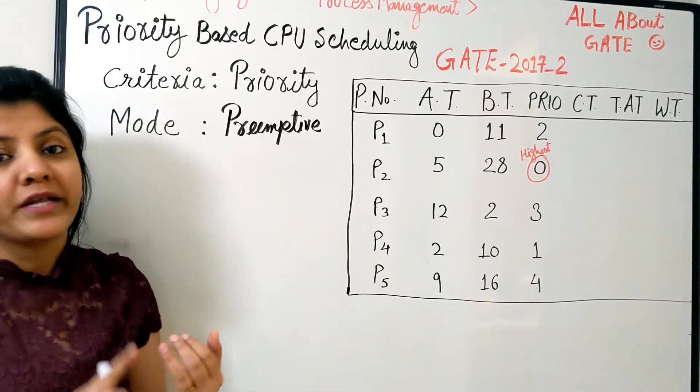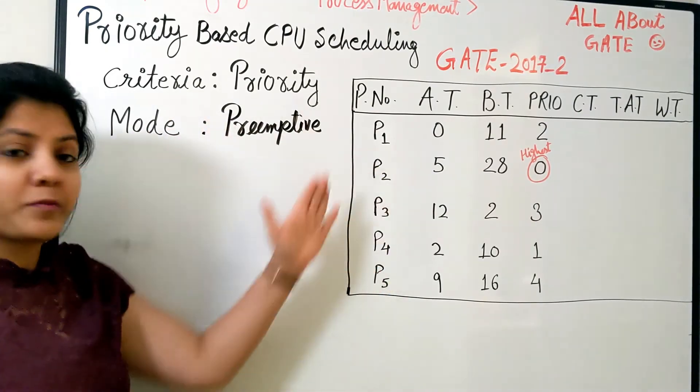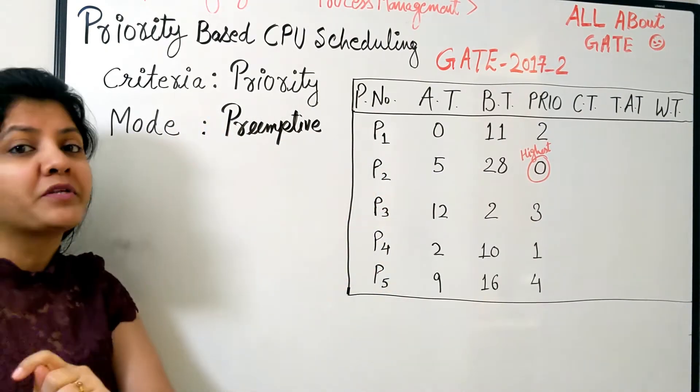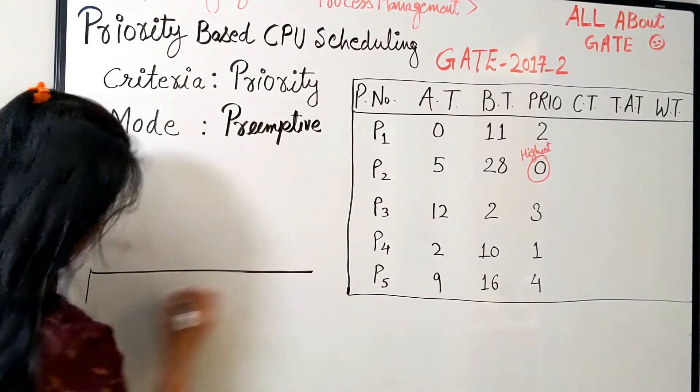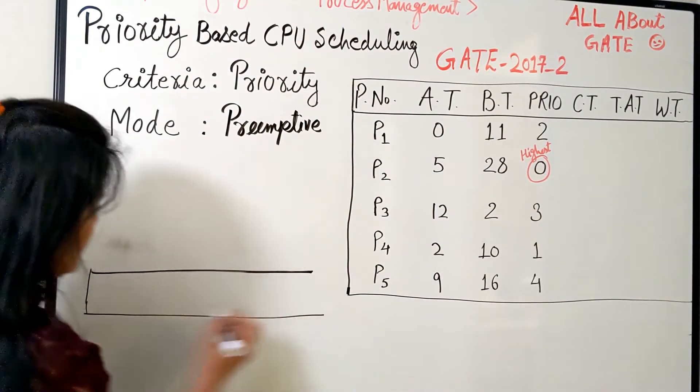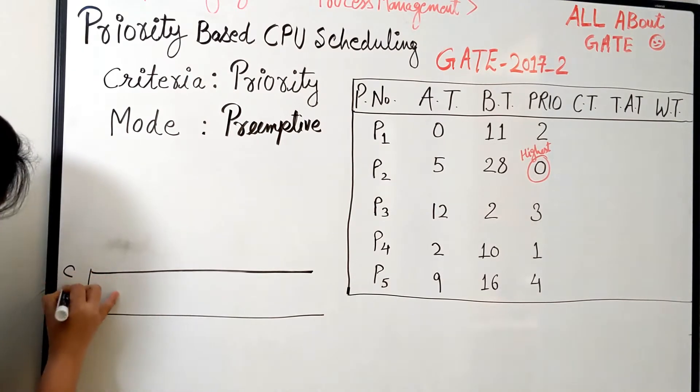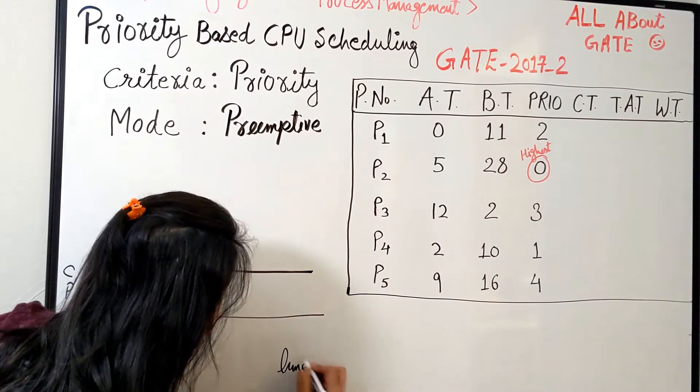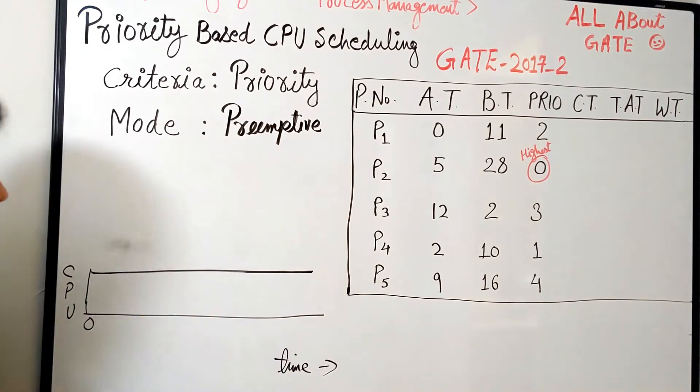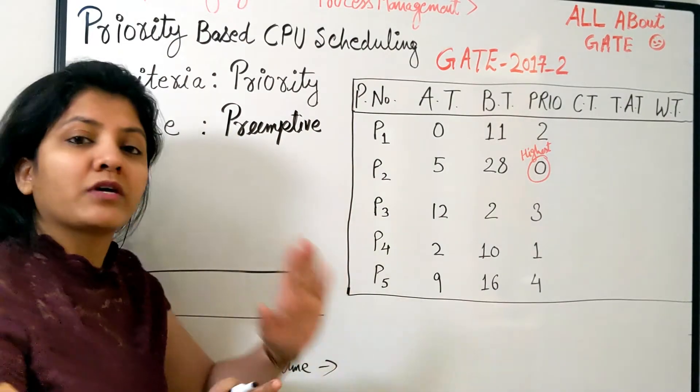The question says calculate the average waiting time for all the processes making use of the preemptive priority scheduling algorithm. So let's begin to schedule the processes based on the priority preemptive algorithm. Here we have the Gantt chart which we are going to make.